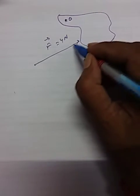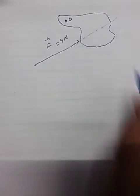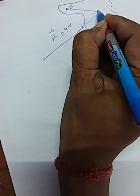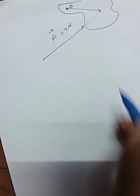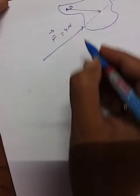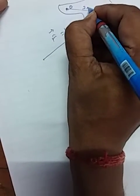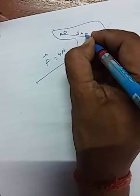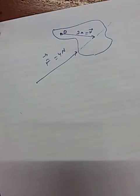And this vector is acting at a distance of three meters from O. This vector is denoted by vector r since this is a displacement vector.